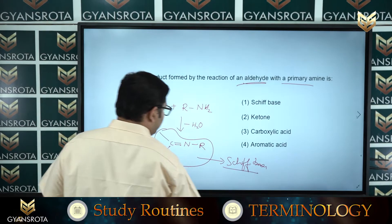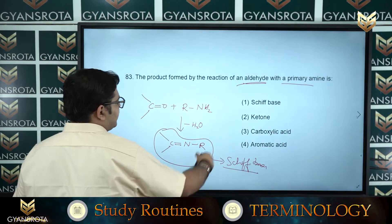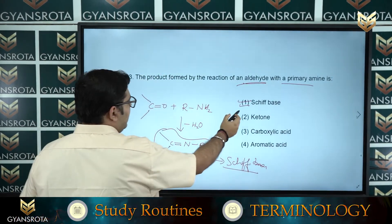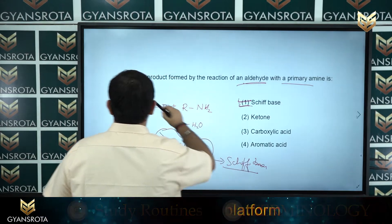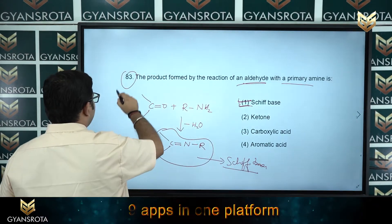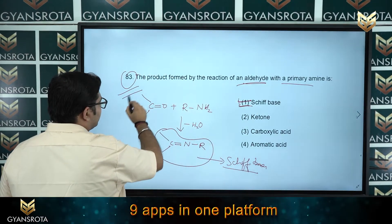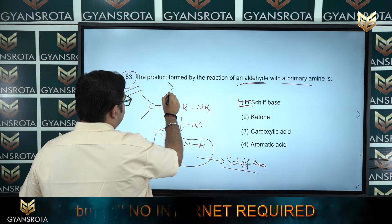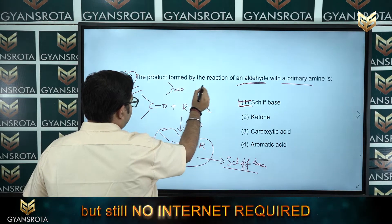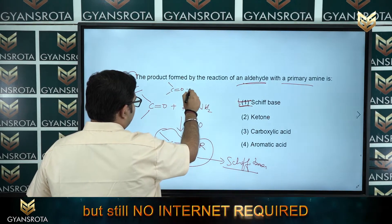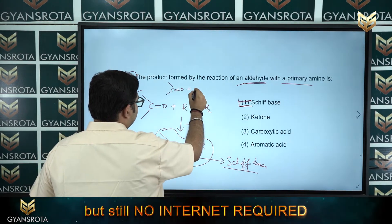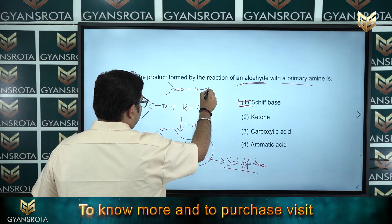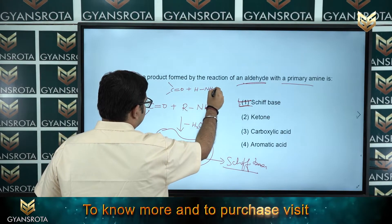Option number 1 is the correct answer of question number 83. The reaction involves C=O reacting with H–N–H–R to form the Schiff base structure.